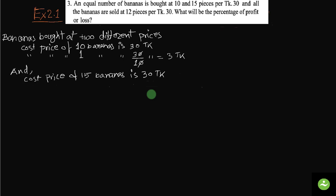An equal number of bananas is bought at 10 and 15 pieces per taka 30, and all the bananas are sold at 12 pieces per taka 30. What will be the percentage of profit or loss? We have to find out the answer to this question — the percentage of profit or loss.